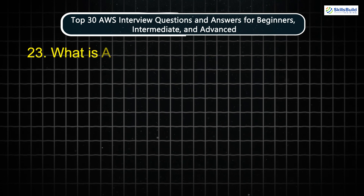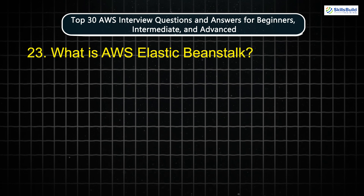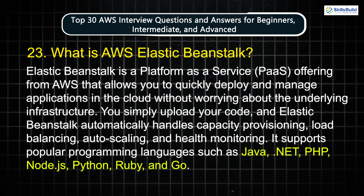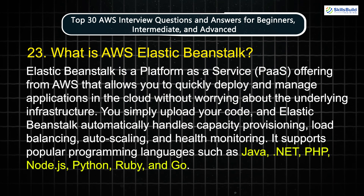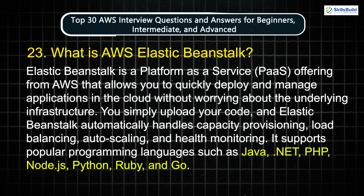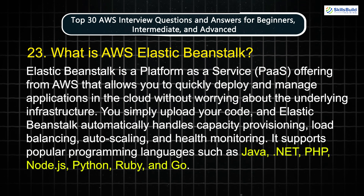Question 23: What is AWS Elastic Beanstalk? Elastic Beanstalk is a platform as a service offering from AWS that allows you to quickly deploy and manage applications in the cloud without worrying about the underlying infrastructure. You simply upload your code and Elastic Beanstalk automatically handles capacity provisioning, load balancing, auto-scaling, and health monitoring. It supports popular programming languages such as Java, .NET, PHP, Node.js, Python, Ruby, and Go.